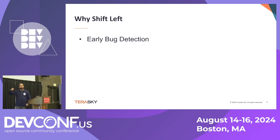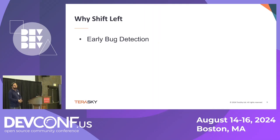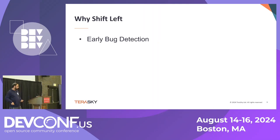So why did we even move to shift left? When we look at why we moved to this, it was for early bug detection. The earlier we can catch things in the software development lifecycle, the better it is, and the quicker we can fix them.